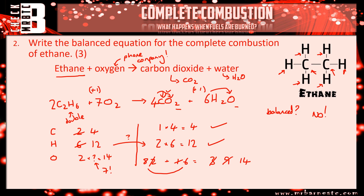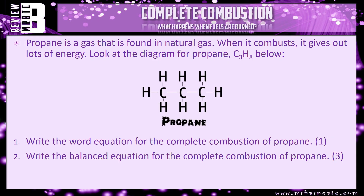That is quite difficult - don't worry if you didn't get that - but hopefully you're starting to get the idea of how putting these balanced equations together works. That's everything for this question. There is a review question which is identical except we're going to look at propane. Propane is a gas found in natural gas; when it combusts it gives out lots of energy. Look at the diagram for propane and write the word equation and the balanced equation - exactly the same as what we've just done.